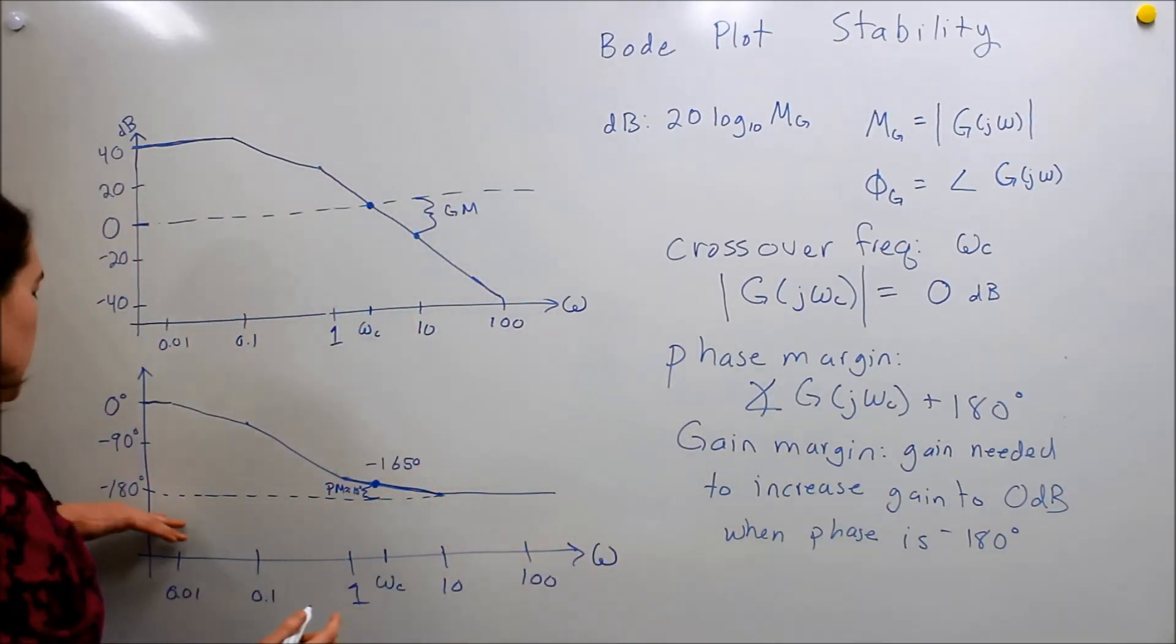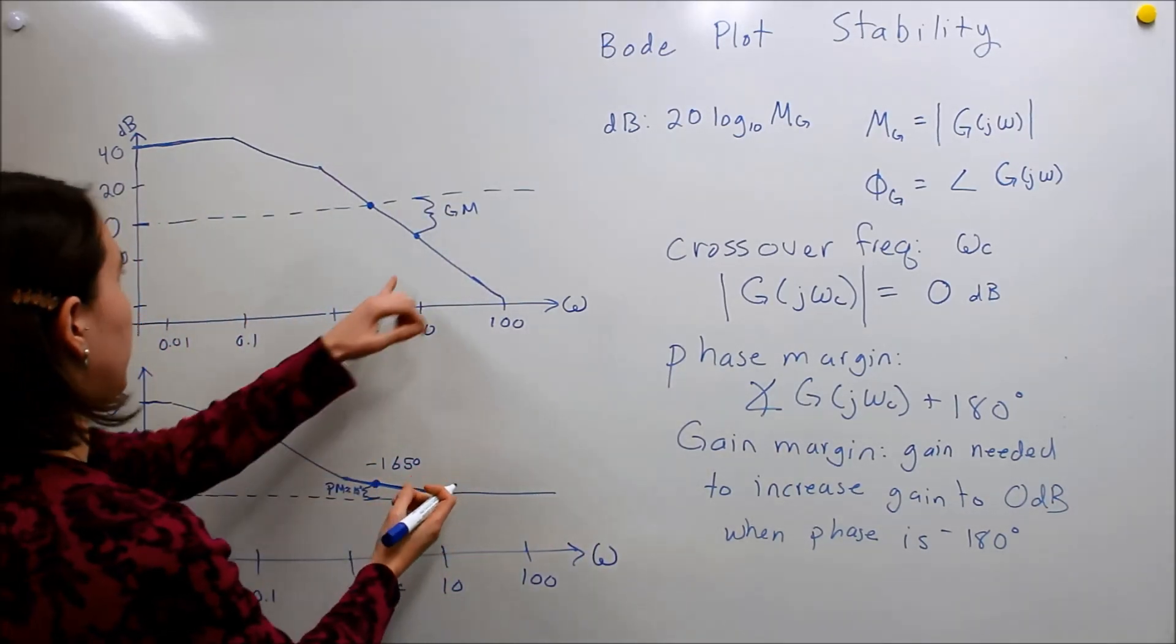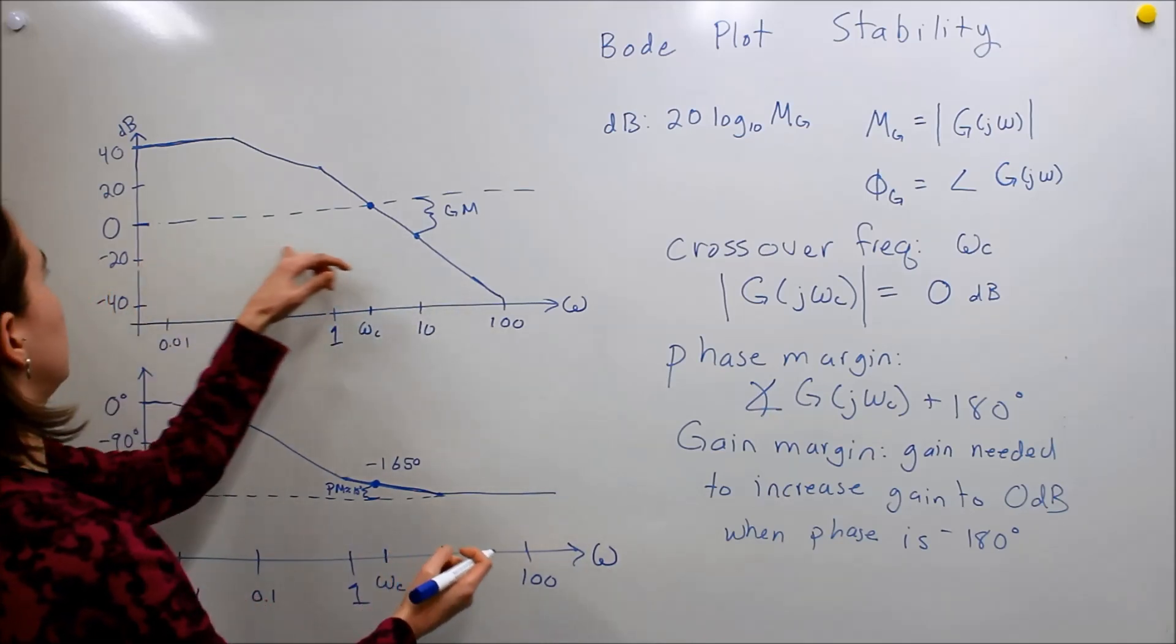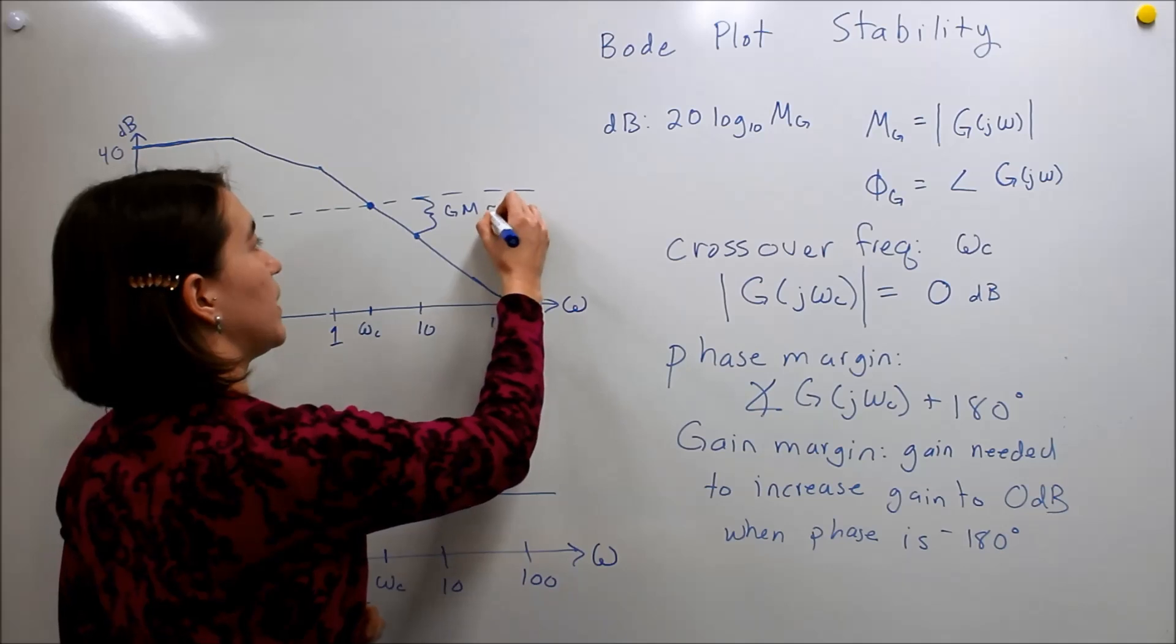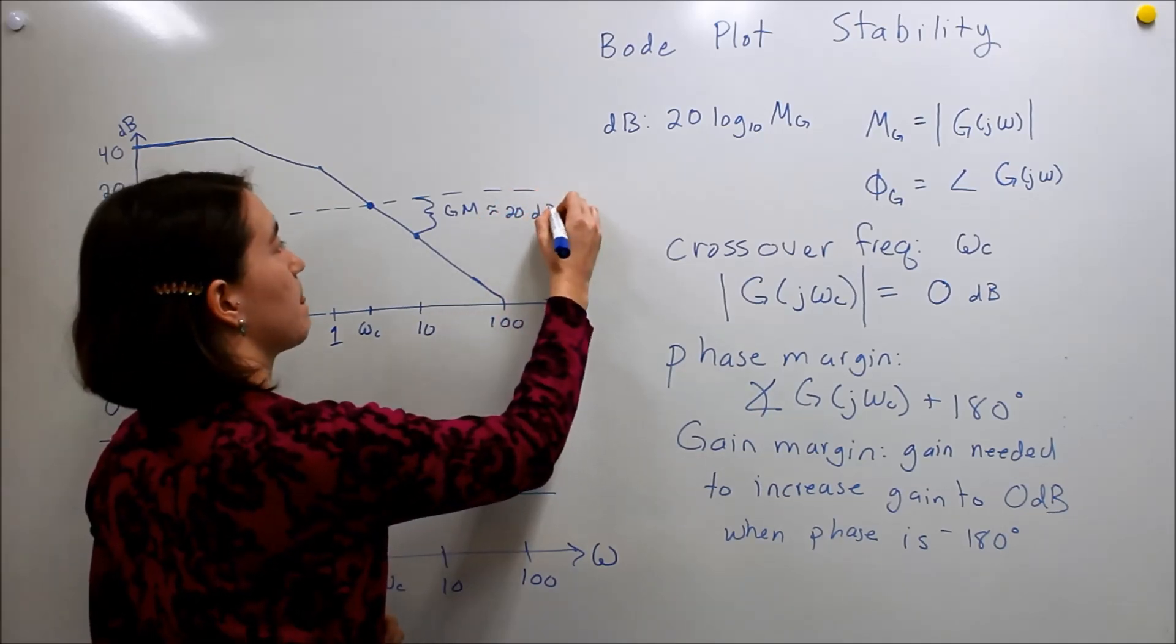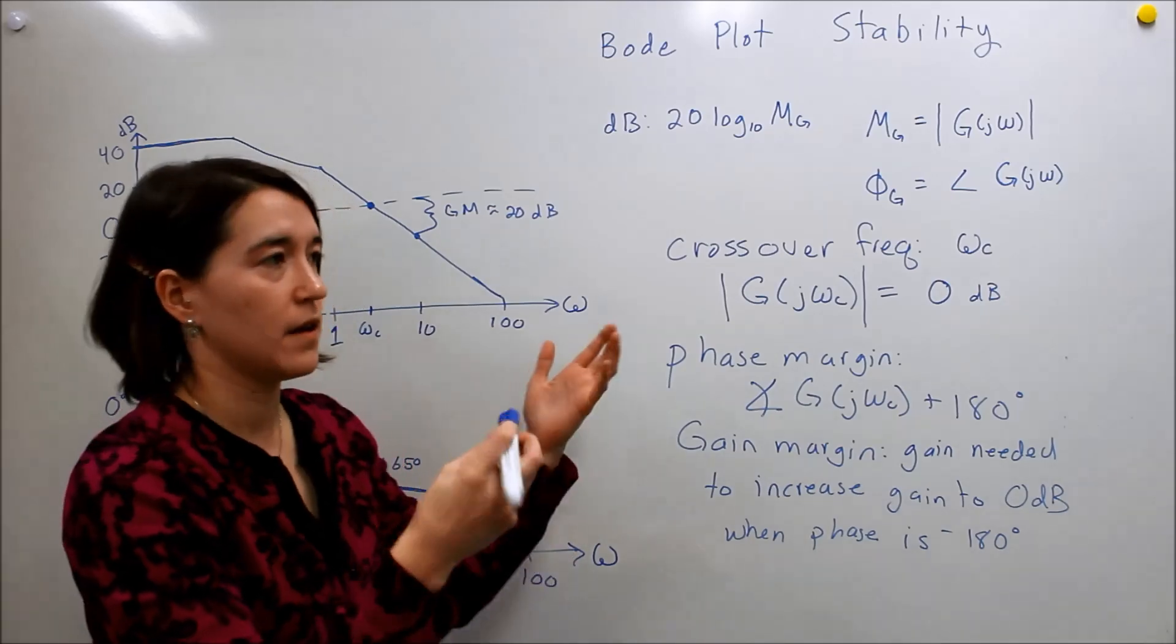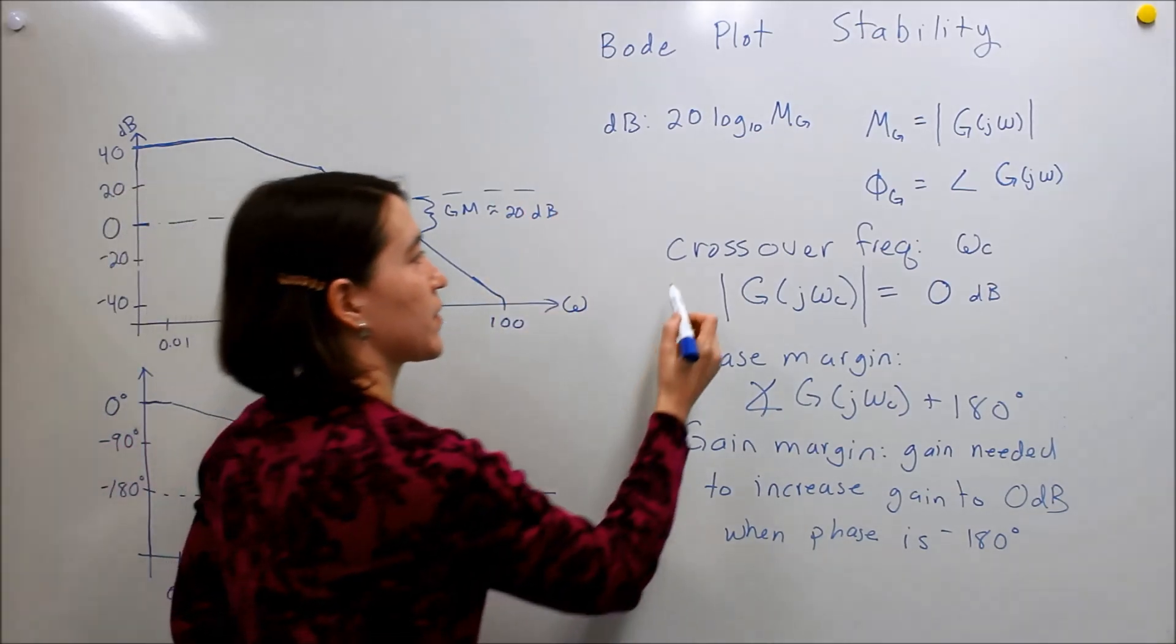Okay, so, here it would be approximately, if we're maybe about negative 20 degrees, the gain margin here would be about 20 dB. Okay, so these are the important terms.